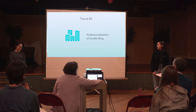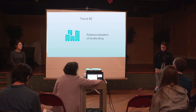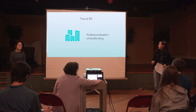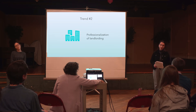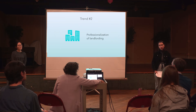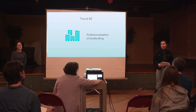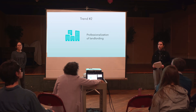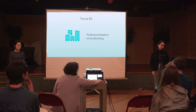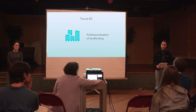The next trend is a professionalization of landlording. One study found that in 1964 in New York and New Jersey, most rental properties were owned by people who made less than 70% of their income from those properties. By 1995, over half were owned by people or entities who made over 75% of their income from rental properties. This is important because it created a larger, more accessible base of landlords and management companies that government could influence, especially regarding crime control policies in tenant selection plans.